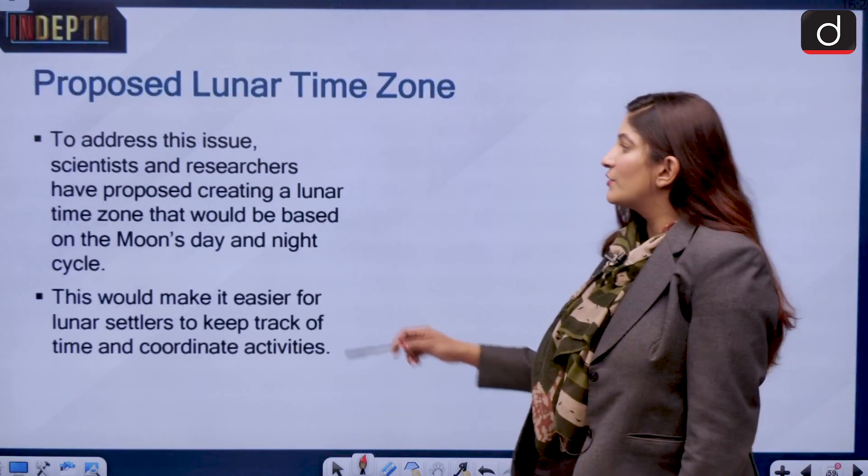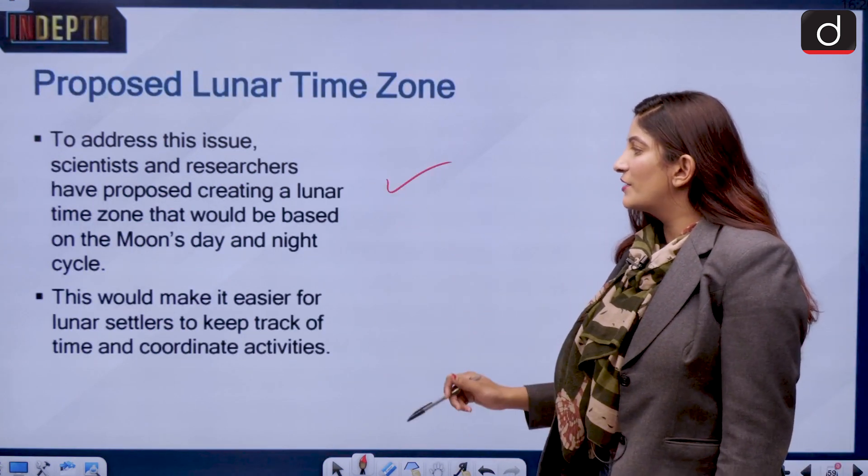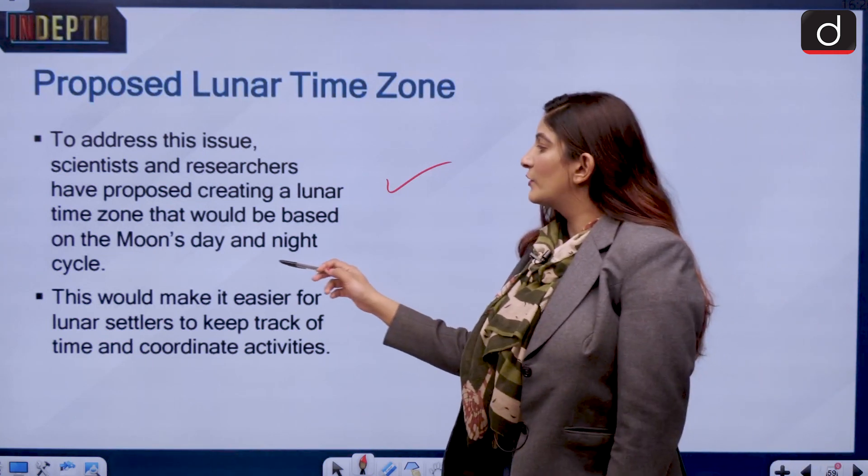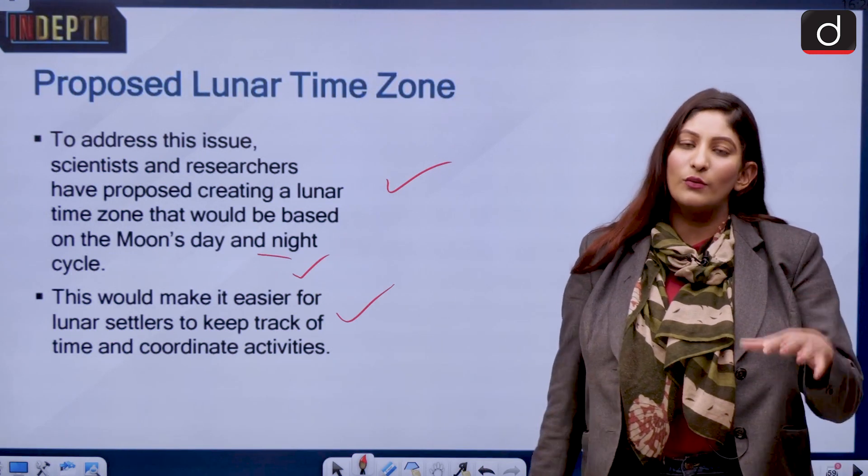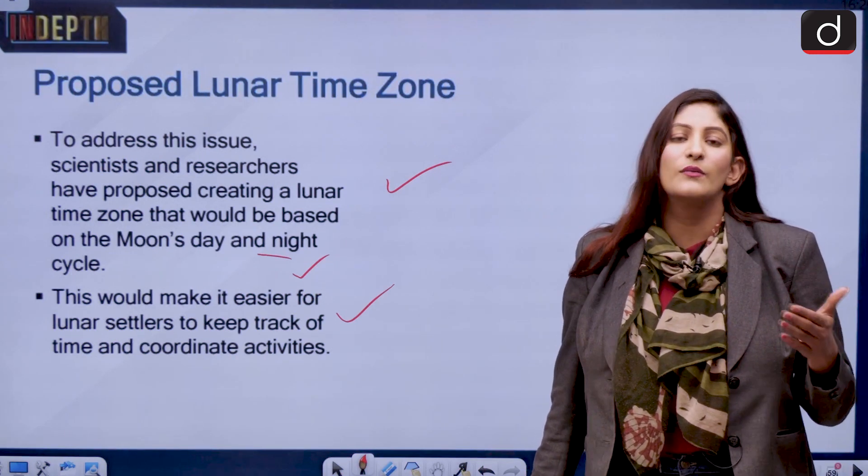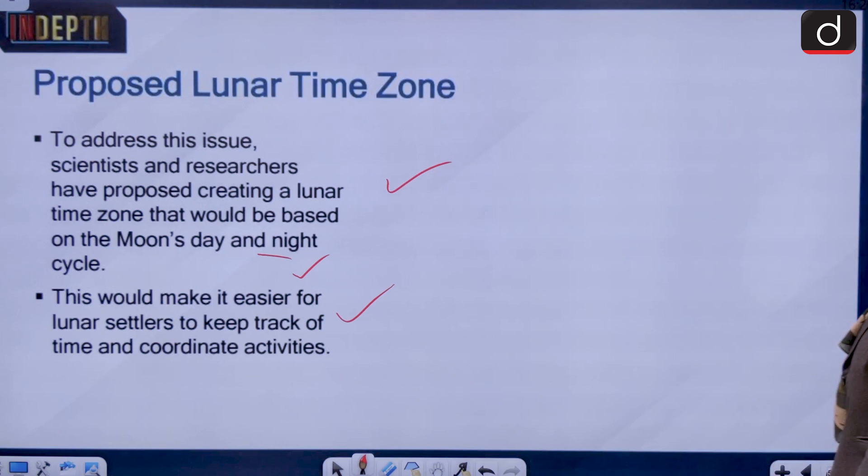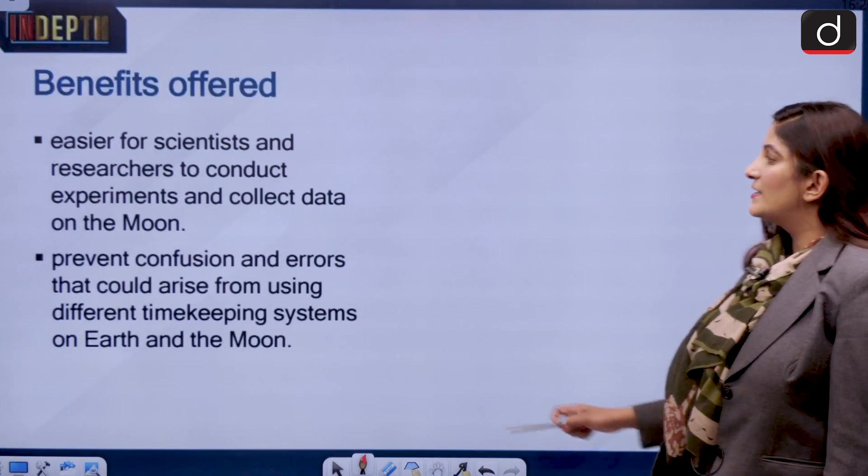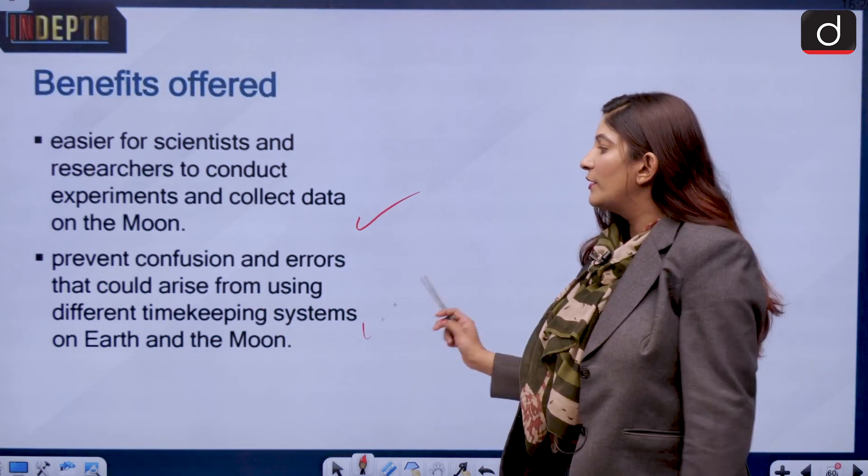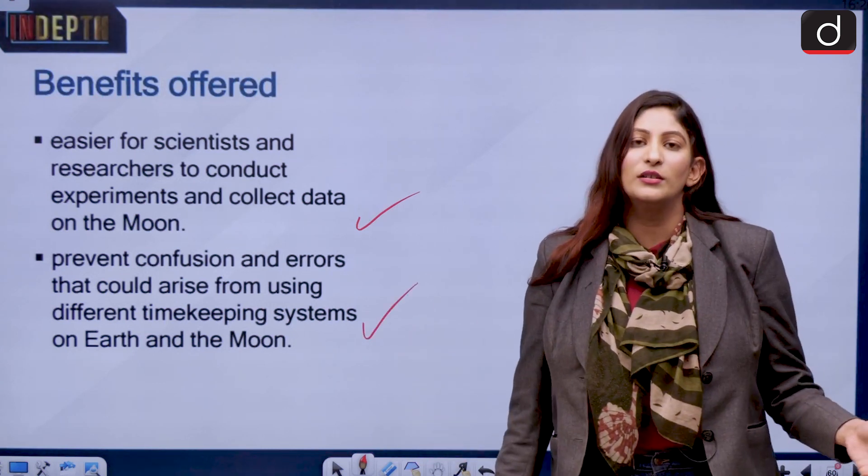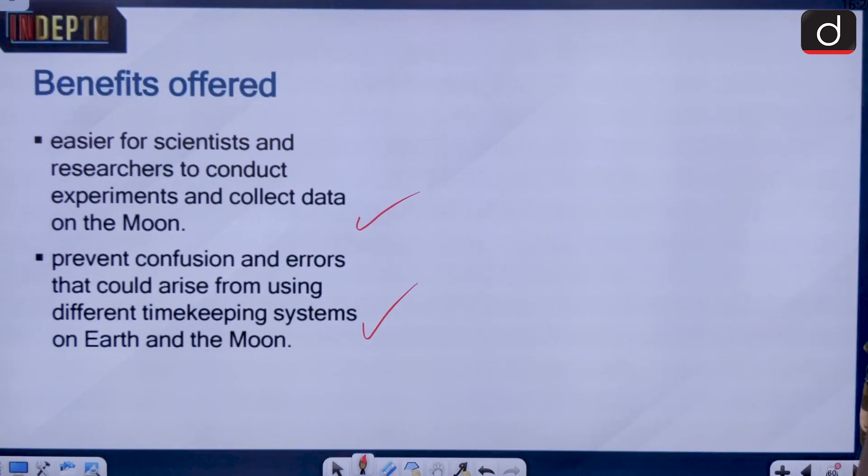To address this issue, scientists and researchers have proposed creating a lunar time zone that would be based on the moon's day and night. It would make it easier for lunar settlers, such as scientists and astronauts who are working there on some scientific experiment, and there would be no confusion between what the time on the earth is and what the time on the moon is.